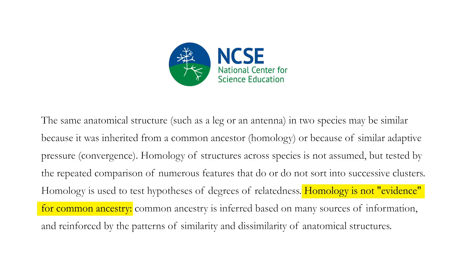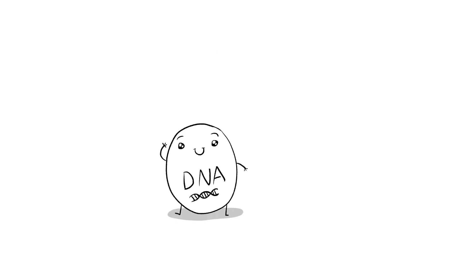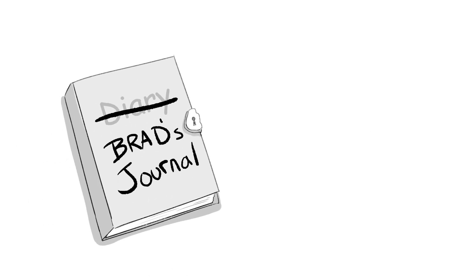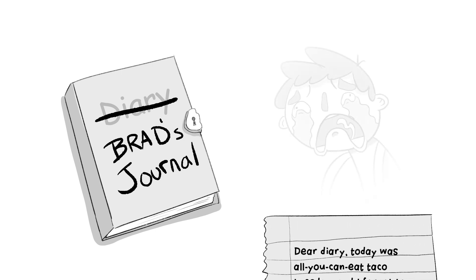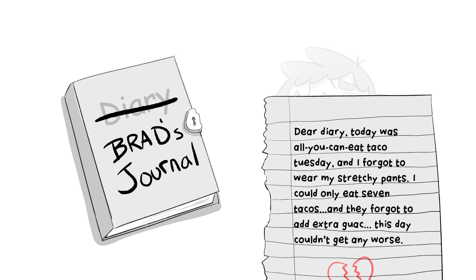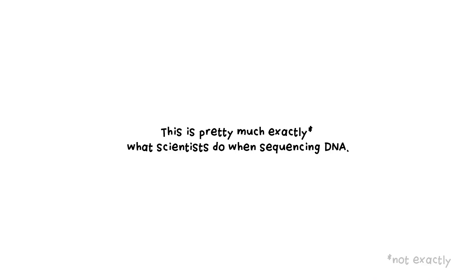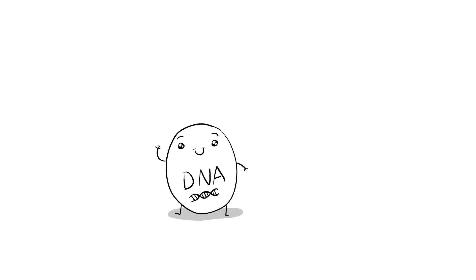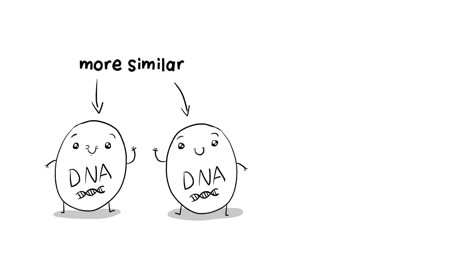Other attempts were made to escape the circularity, but they had to give up on homology as evidence and instead looked to other lines of evidence for common ancestry — namely, DNA. Eyeballing bones was a bit subjective anyway, like trying to guess what someone's thinking by looking at their face. But if you could look deeper by reading his diary, you'd see what's going on with far more precision. This is pretty much what scientists do when sequencing DNA — they move to the more objective realm of cold, hard numbers. The rule of thumb is: the more similar the DNA, the more closely related.